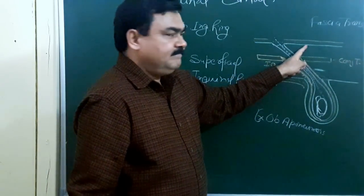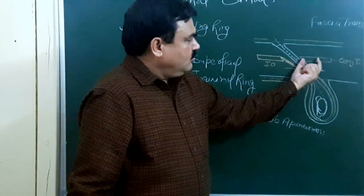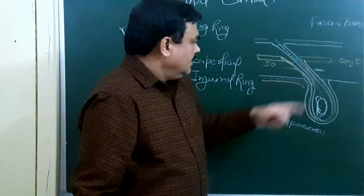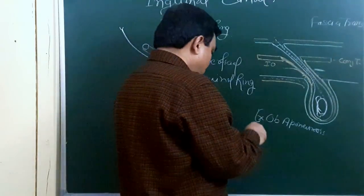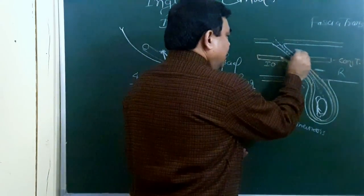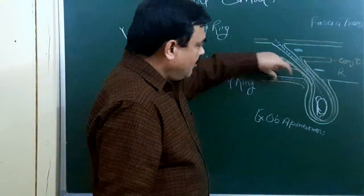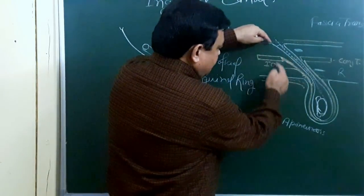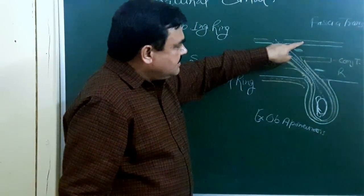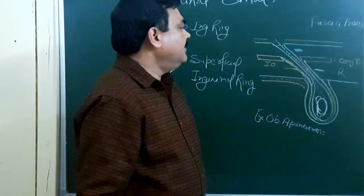The posterior boundary is formed throughout its whole extent by the fascia transversalis, and in about two-thirds of its extent by the conjoint tendon. Also contributing are the reflected part of the inguinal ligament, the interfoveolar ligament, the extraperitoneal connective tissue, and the parietal peritoneum.